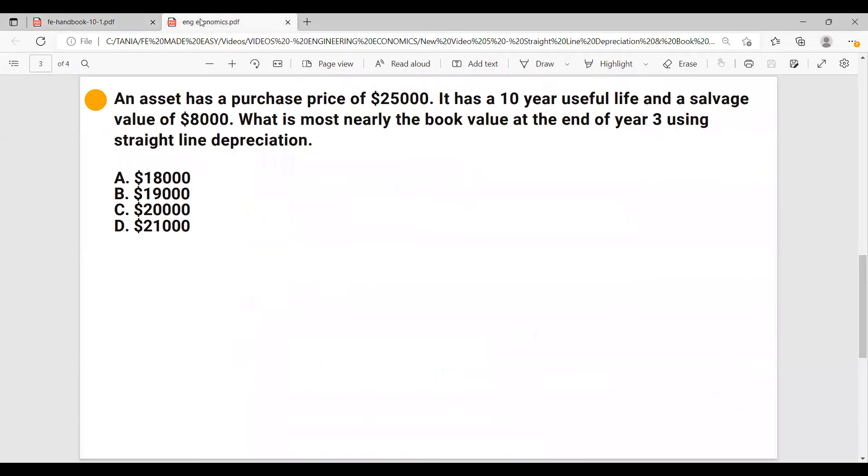Okay, let's go ahead and apply these formulas. So depreciation equals to the cost minus salvage value over the lifetime of project. So in our case we have $25,000 minus $8,000 salvage value over 10 which is the life of the project or of the asset. And this equals to $1,700 depreciation per year.